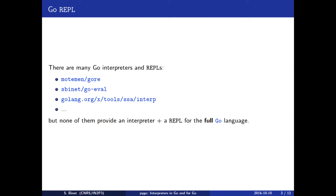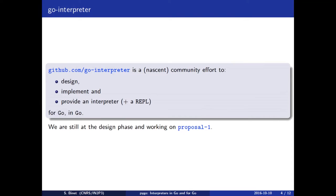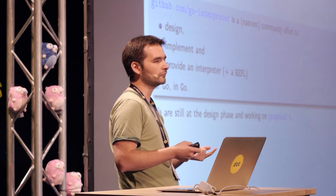There are already many Go interpreters and REPLs, but none of them provide an interpreter plus a REPL for the full Go language. So, with a couple of gopher friends, we set up the Go Interpreter organization on GitHub, which tries to gather the nascent community effort to design, implement, and hopefully also provide an interpreter plus a REPL for Go and in Go.